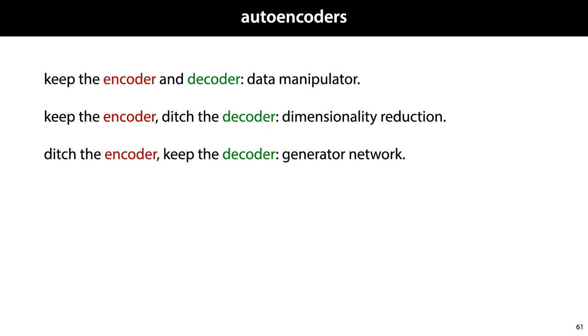If we keep only the encoder and ditch the decoder, we get a dimensionality reduction function. We can use the latent space representations as the features for a model that only works well on a small feature space. And if we ditch the encoder and keep the decoder, we get a generator network.